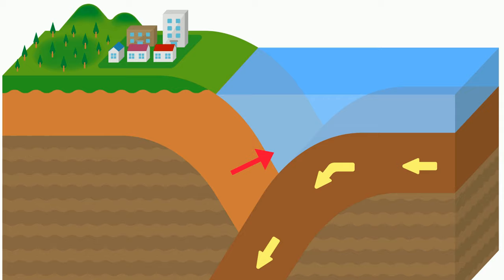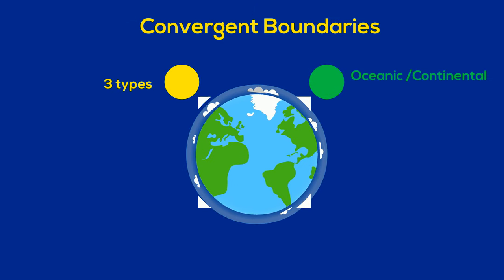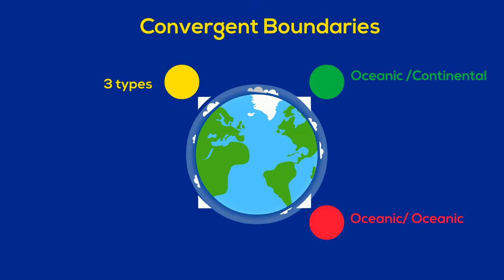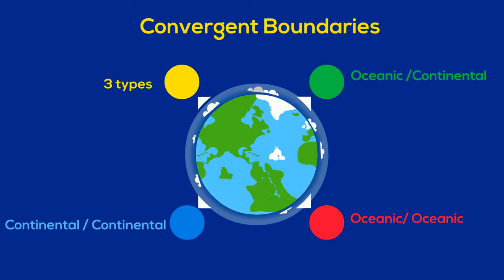There are three major types of convergent boundaries: oceanic and continental lithosphere, oceanic and oceanic lithosphere, and continental and continental lithosphere.